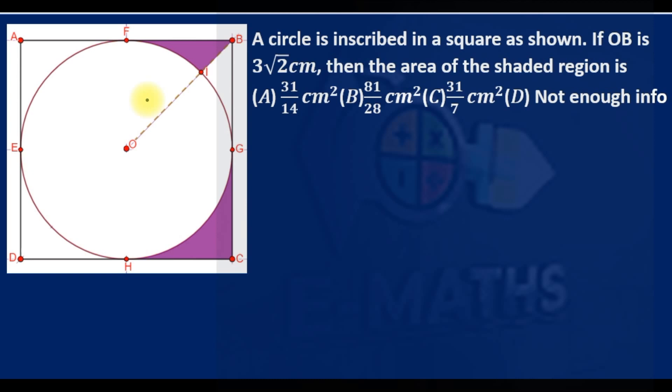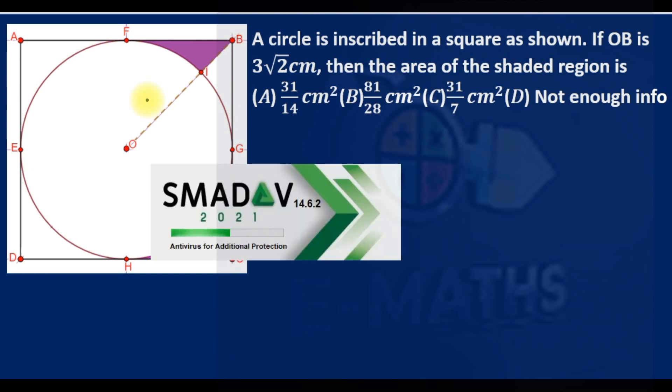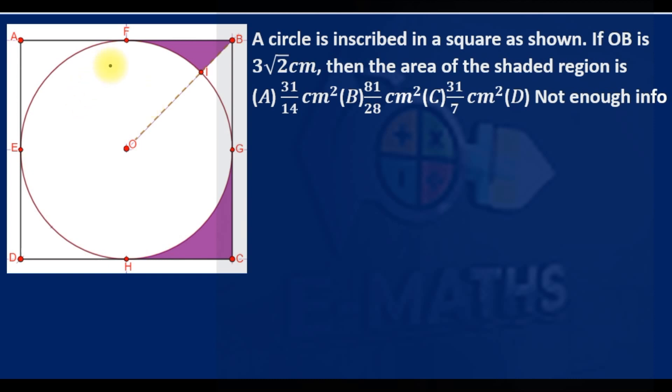So what I would do, I'll first join F to H. Once I joined it, you can see that will form a rectangle, rectangle FBCH. Assuming we shaded this region, assuming this part of the region shaded...